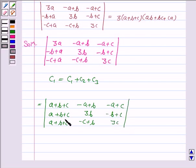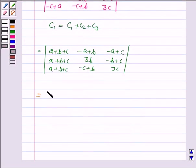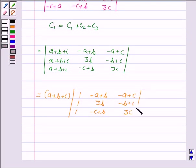Now, we take a plus b plus c common from the first column. We get minus a plus c, minus b plus c, 3c. Again, we apply the row operation.